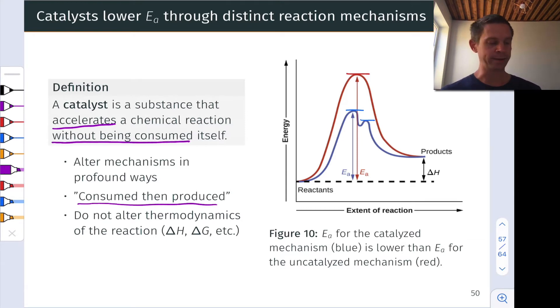Another thing that I'll point out is related to this third bullet point. Notice that the energies of the reactants and products are the same for both pathways. And this reflects the fact that the catalyst is used up, but then produced again. And so it doesn't appear in the overall balanced equation, and it cannot affect the energetics of the reactants and products. The delta H of the reaction is the same in both the catalyzed and uncatalyzed pathways.